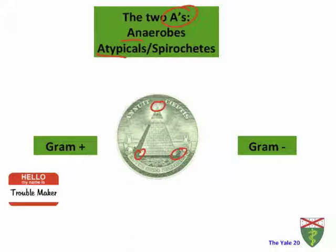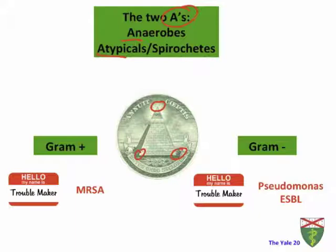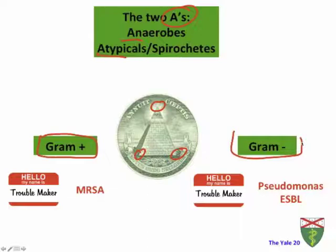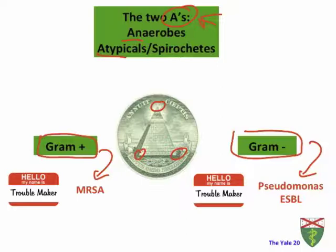For gram positives, there is a troublemaker: MRSA, which is not covered by most antibiotics that normally cover gram positive bacteria. Gram negatives have two troublemakers: Pseudomonas and ESBL — extended spectrum beta-lactamase producers — which are resistant against beta-lactams including cephalosporins. So keep in mind: gram positives with MRSA as troublemaker, gram negatives with Pseudomonas and ESBL as troublemakers, and the two A's. If you think about that, you're going to be golden.